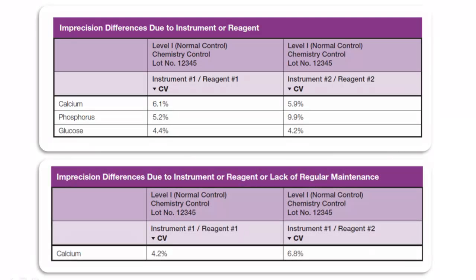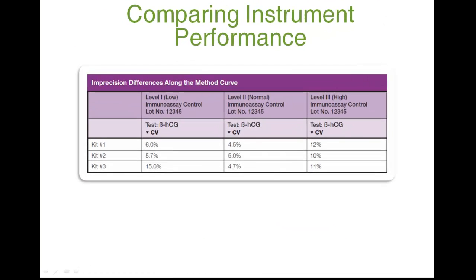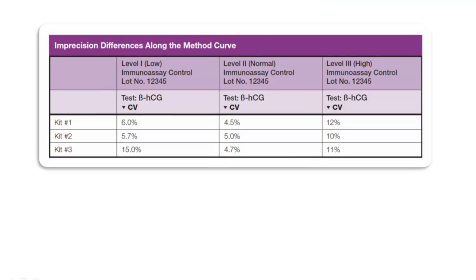In the second table, the difference in performance is probably due to the change from reagent 1 to reagent 2. However, it could also be due to lack of regular maintenance or some other cause. The data in this table is for three different kits for testing beta-HCG. Kits 1, 2, and 3 exhibit similar performance in the normal range and at the high end of the method curve. However, kit 3 has a much higher CV at the low end of the curve, providing justification to use either kit 1 or 2 rather than kit 3 for testing.